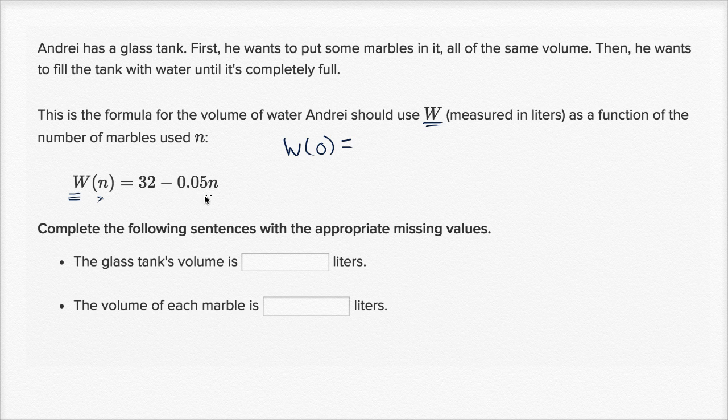And what is this going to be? Well, W of 0, when n is equal to 0, this term goes away and we're left with 32. So W of 0 would be volume of entire tank, volume of tank which is equal to 32 liters.